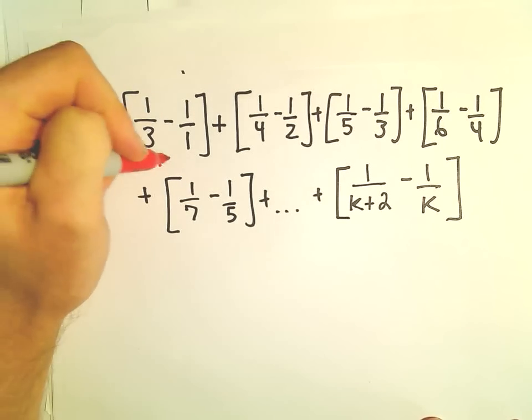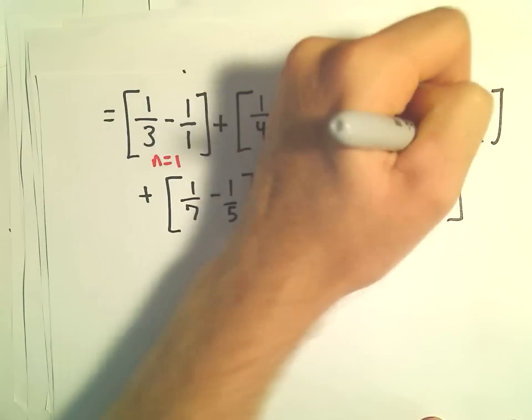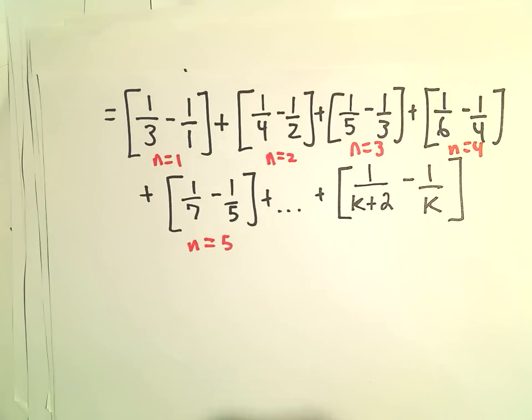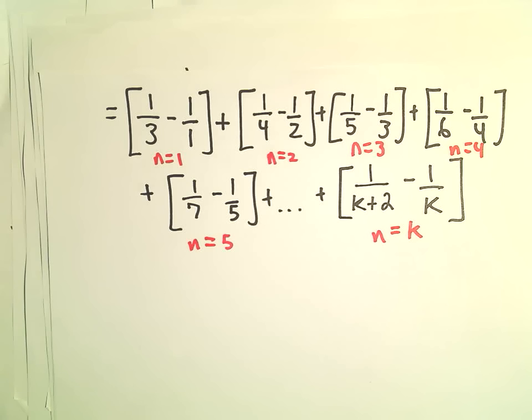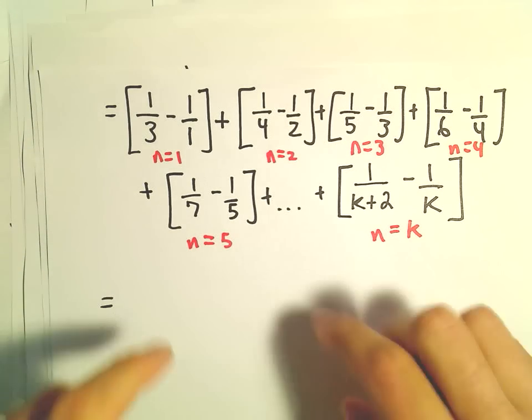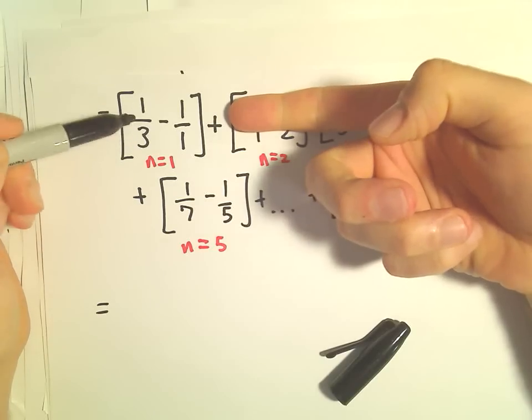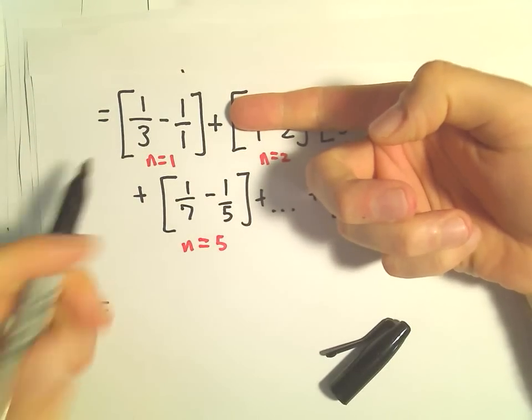Again, this is our n equals 1 term, n equals 2, n equals 3, n equals 4, n equals 5, and then generically, our last term is when n equals k. Okay, so let's see. If we only just plugged in n equals 1, nothing would happen. We would be left with a third minus 1, and that would be our value.